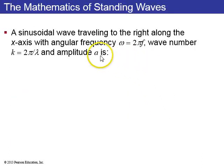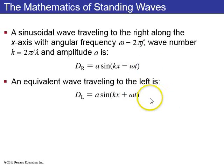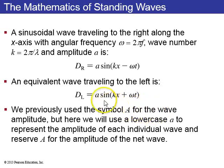So, a sinusoidal wave traveling to the right is given by D equals A sine kx minus omega t, and an equivalent wave, same amplitude traveling towards the left, is A sine kx plus omega t. Now, notice that usually, or we used to use capital A for the amplitude. Now I want to use lowercase a to represent the amplitude for each of these two individual waves that we're going to add.